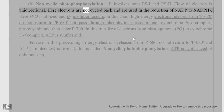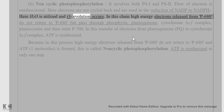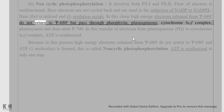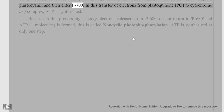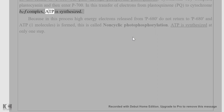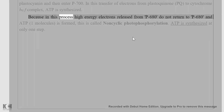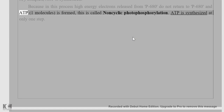(b) Non-cyclic photophosphorylation: it involves both PSI and PS2; the flow of electrons is unidirectional. Electrons are not cycled back and are used in the reduction of NADP to NADPH2. H2O is utilized and O2 evolution occurs. High energy electrons released from P680 do not return to P680 but pass through pheophytin, plastoquinone, cytochrome b6f complex, plastocyanine, and then enter P700. In the transfer from plastoquinone to cytochrome b6f complex, ATP is synthesized. One molecule of ATP is formed; this is called non-cyclic photophosphorylation. ATP is synthesized at only one step.